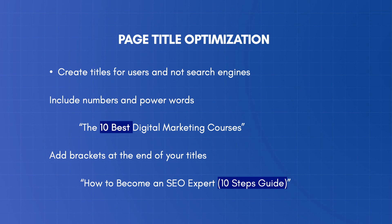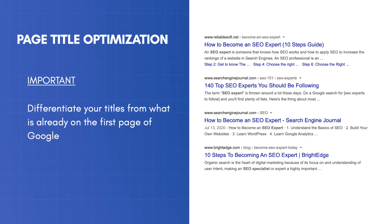A final rule that is crucial for your SEO is to differentiate your titles from what is already on Google's first page. Before finalizing your page titles, it's always a good practice to search Google for your target keywords and analyze the top results. Google likes to present different titles in the first 10 positions, so to increase your chances of appearing on the first page, you need to make sure that your chosen title is not exactly the same as any of the existing entries.